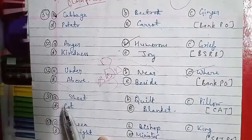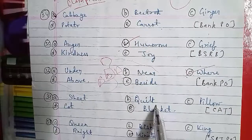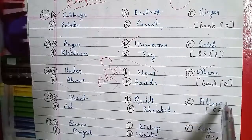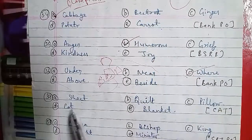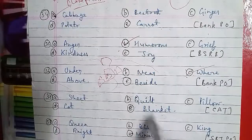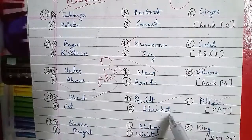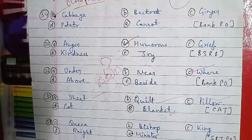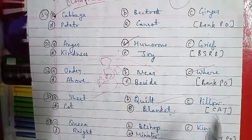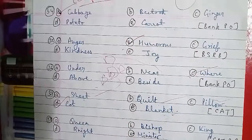Question number 37: Option A is Sheet, B is Quilt, C is Pillows, D is Cot, and E is Blanket. All of these are things used on a bed — sheet, quilt, pillows, and blanket. But Cot is the bed itself, not something used on it. So Cot is the odd one out. This was asked in the CAT question paper.